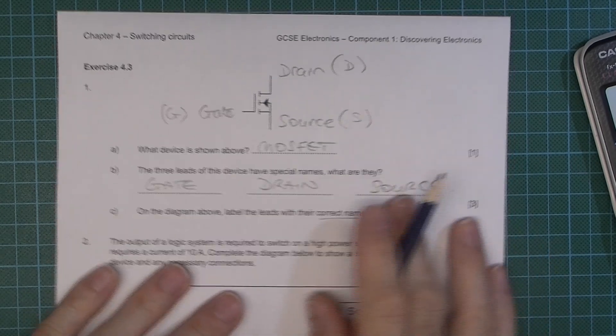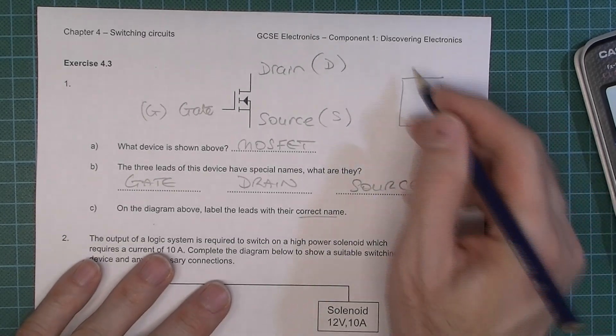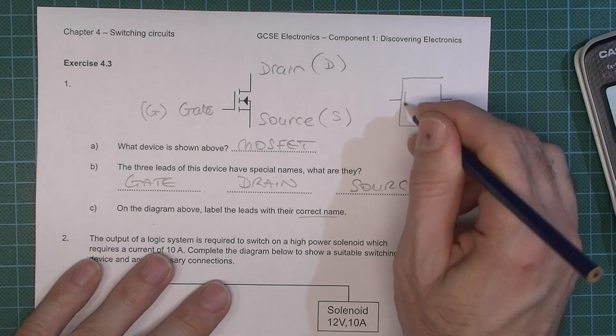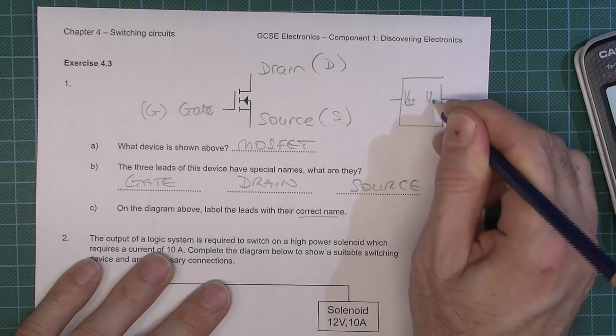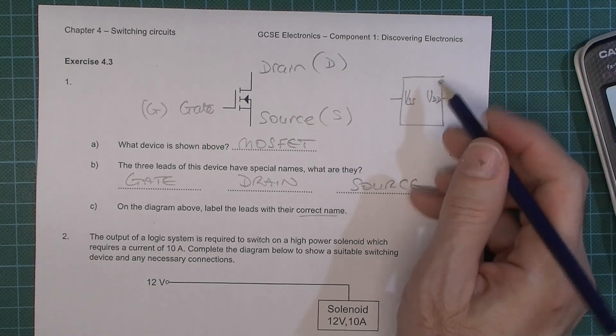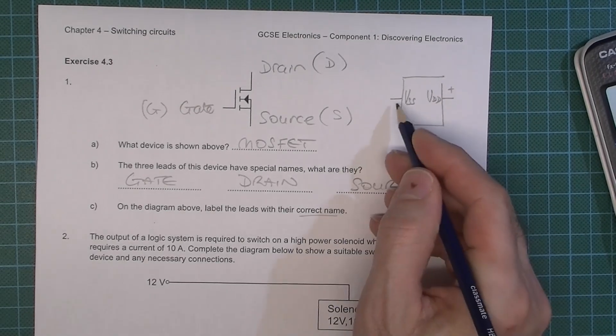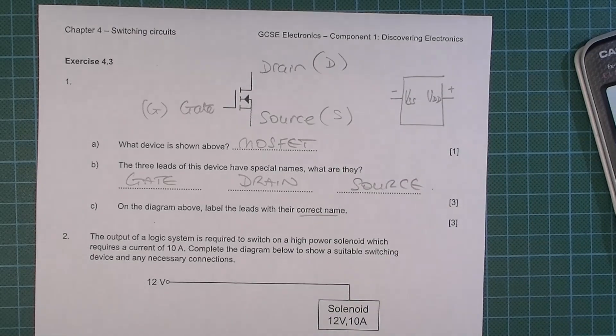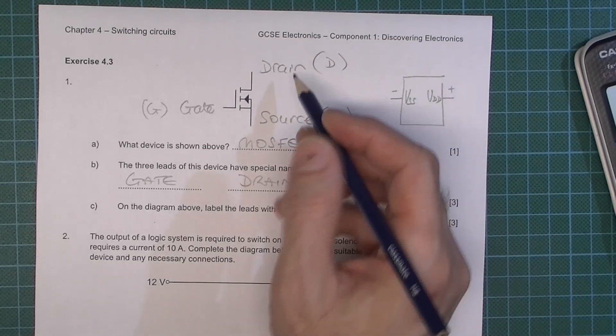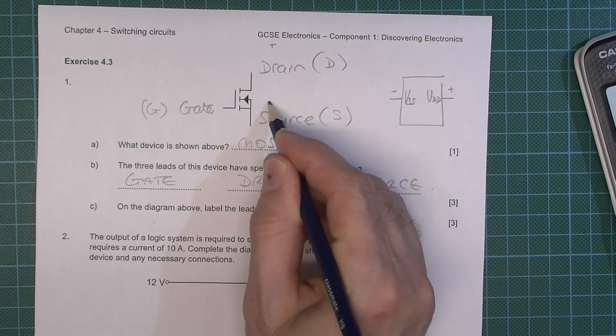It's worthwhile noting that you often see components like integrated circuits and they might have things like VSS and VDD. I don't know whether you've ever noticed that. Well, the VDD is the more positive side and the VSS is the more negative side and hopefully when you're familiar with using MOSFET you'll understand that the drain is more positively biased than the source.